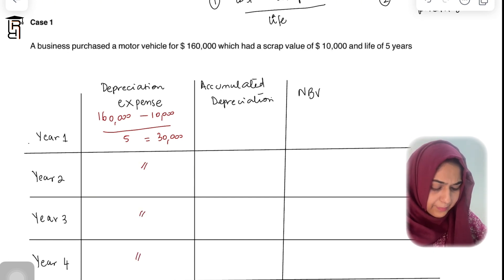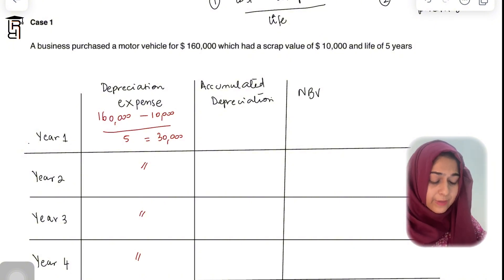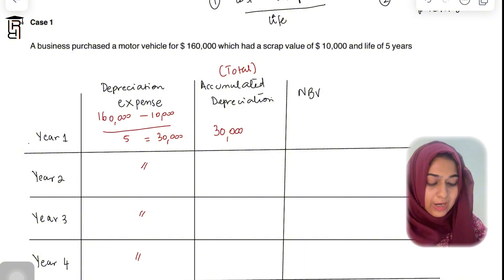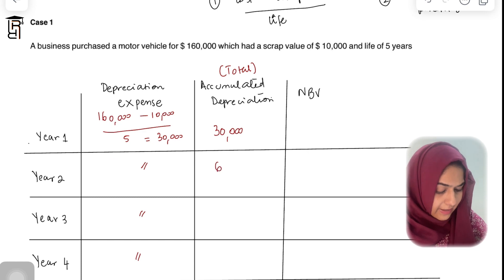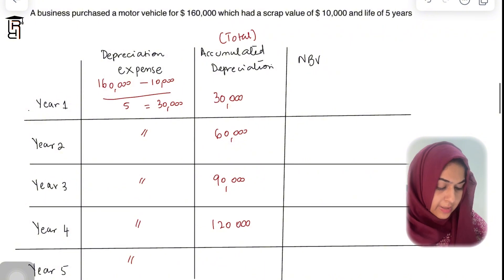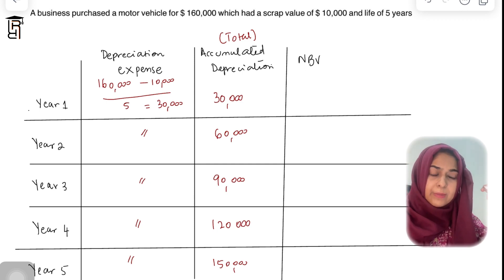The depreciation expense of $30,000 applies for years one through five. Accumulated depreciation — which means the total depreciation charged to date — is: $30,000 after year one, $60,000 after year two, $90,000 after year three, $120,000 after year four, and $150,000 after year five. You keep adding the annual depreciation expense each year.